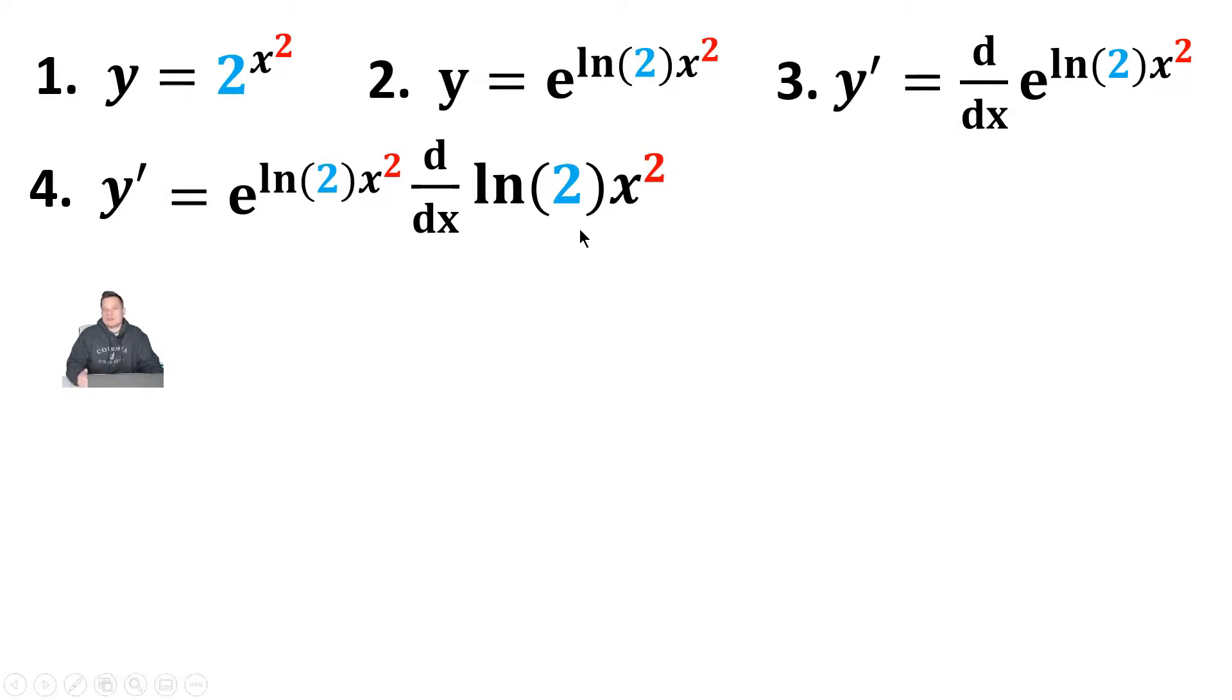Keep in mind that ln of 2 that you see there is just a number. It's a constant. If you punch that into your calculator, it could be like a number, maybe a half or 0.75, 1.2. So let's go on to the next step.